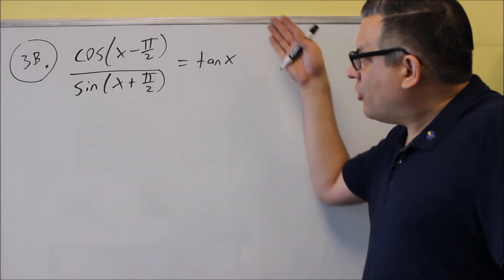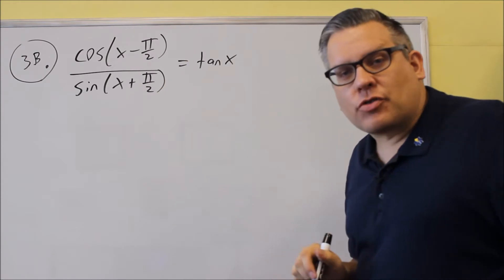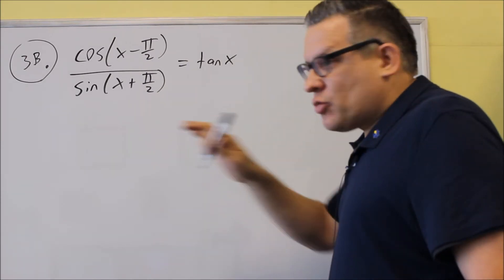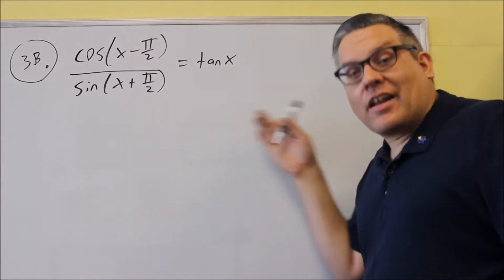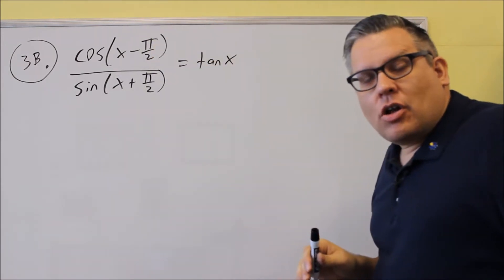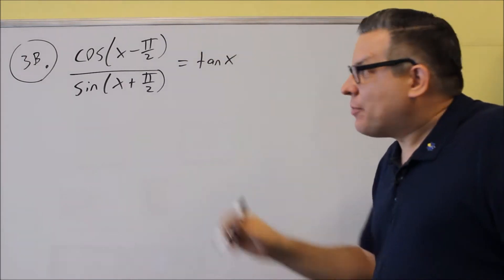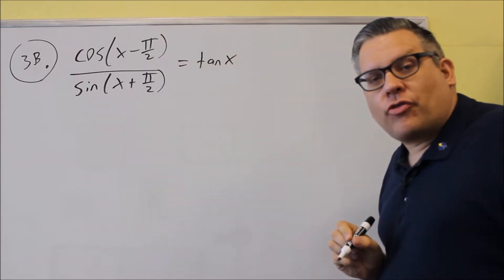For 3B is another one. You're doing the established identity problems, but you're working with the sum and difference formulas. The last one had two formulas that were added together, so this one we're going to have division. Like the last problem, because we see two different trig functions, we're going to use a separate sum or difference formula for each one.